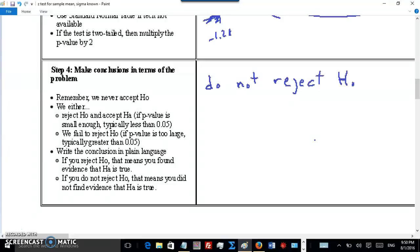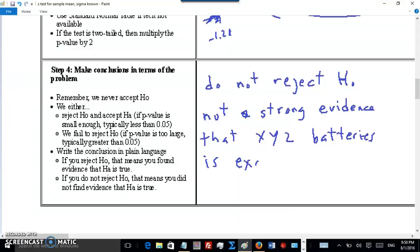P-value is more than 0.05, so we do not reject the null hypothesis. We can say that there is not strong evidence that the company is exaggerating, that XYZ Batteries is exaggerating.